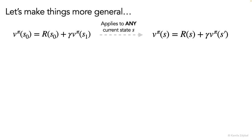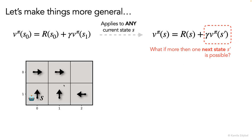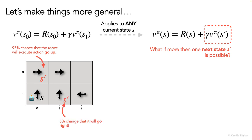And now let's account for one more thing: what if there's actually more than one possible next state achievable from any current state? This could happen, for example, if we had an imperfect robot that we know can malfunction sometimes. So we might tell it to go in a particular direction and it will actually do something else. For example, if we tell the robot to go up in the current state s, there might be a 95% chance that the robot actually goes up, but also a 5% chance that the robot will move right and enter a different state as the immediate next state.